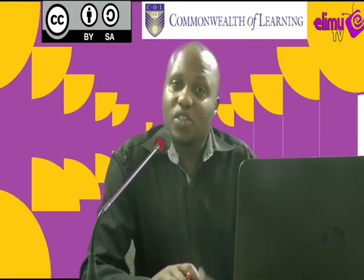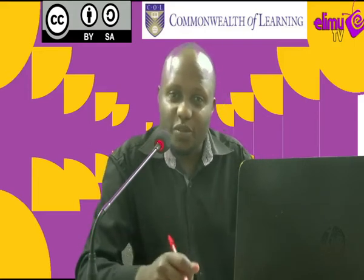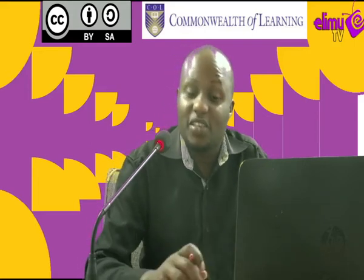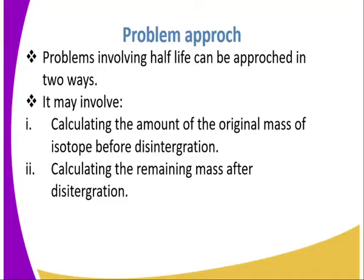This knowledge is what has been used previously in carbon dating — determining the age of fossils. Problems involving half-life can be approached in two ways: one may involve calculating the original mass of the isotope before disintegration, or calculating the remaining mass of the isotope after disintegration. We are going to look at each approach one at a time.